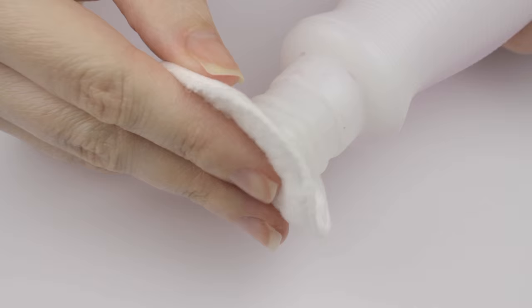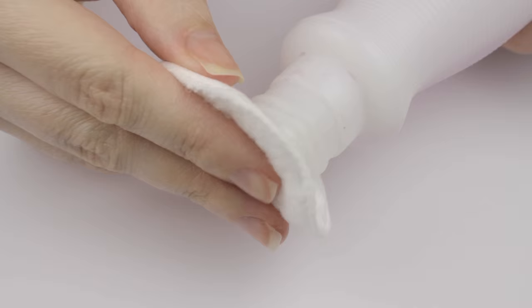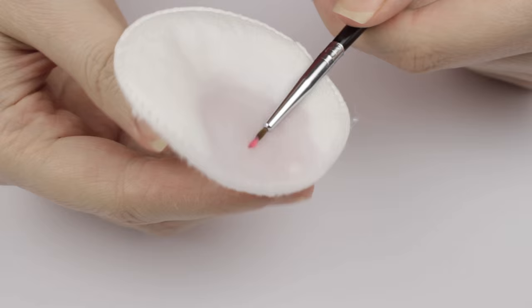To take the polish off, I use a cotton pad and some nail polish remover. I prefer this over pure acetone because it doesn't dry the bristles out. Wipe the bristles in the cotton pad until all the polish is off.